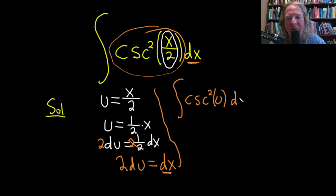Let's go ahead and pull that 2 outside of the integral. Remember, you can pull constants out all day long. You just can't pull variables out.